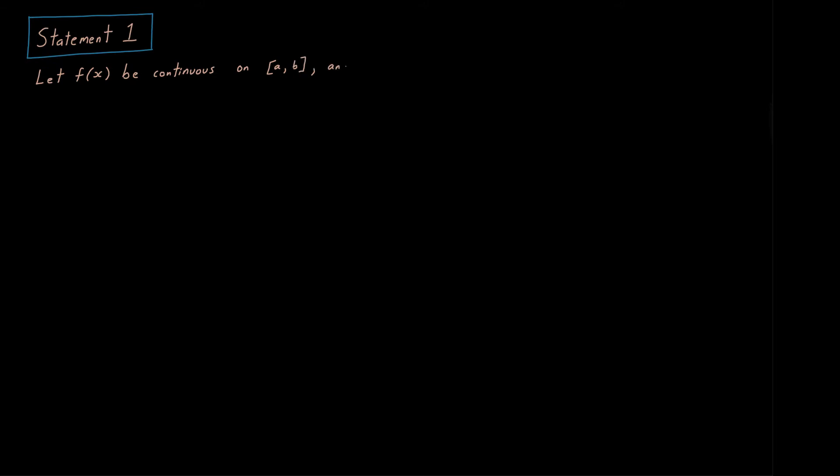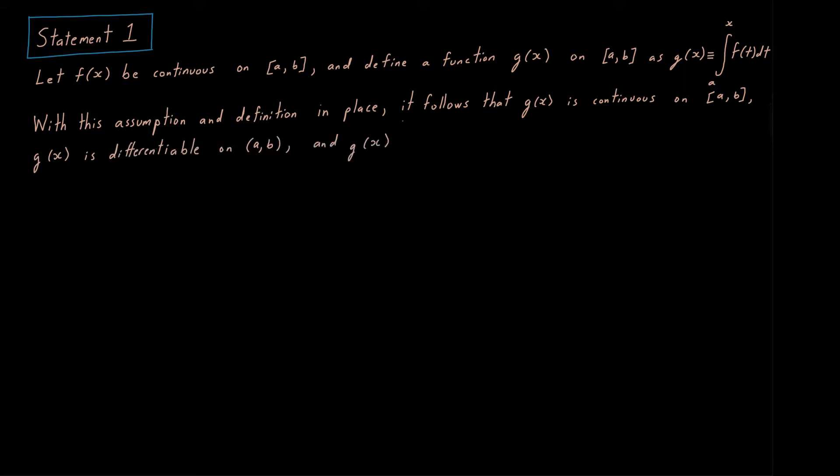It goes like so. We're going to choose any function f that's continuous on some closed interval a,b, and we're going to use that guy to define a function g like so. He's what's called an area function. We'll talk about him in a second, but it turns out with this assumption and definition in place, it will follow that g will be continuous on that closed interval, g will be differentiable on that open interval, and most crucially, g will be an anti-derivative of f, i.e. g prime will be f.